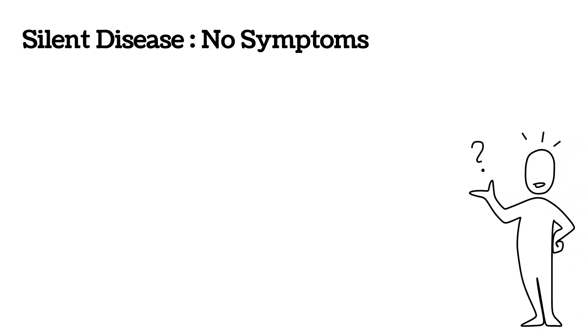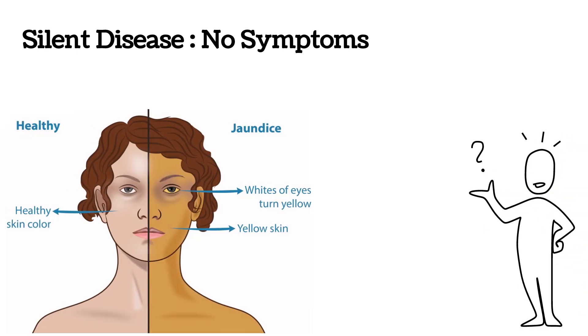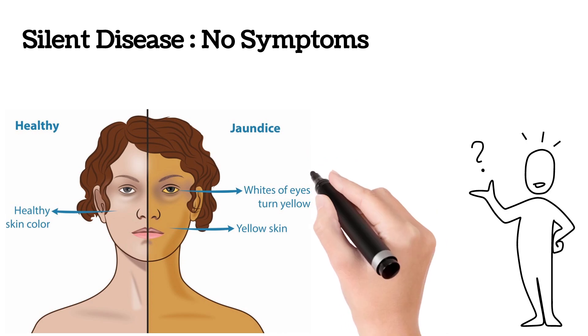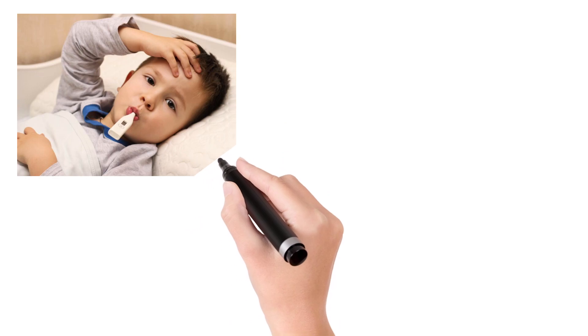Symptoms may vary. There are symptoms like jaundice, where there is a yellowish discoloration of the eyes and a yellowish discoloration of the skin. The person may feel fatigue, weakness, and there will be nausea and frequent fever.